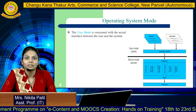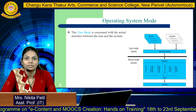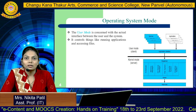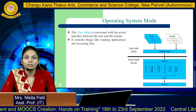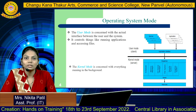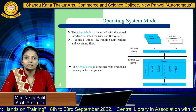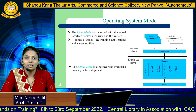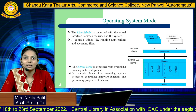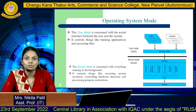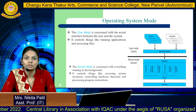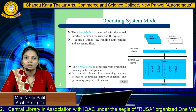The first is user mode, which is concerned with the actual interface between the users and the system. It controls things like running applications and acting upon files. The kernel mode is concerned with everything running in the background. It controls things like accessing system resources, controlling hardware functions, and processing program instructions.